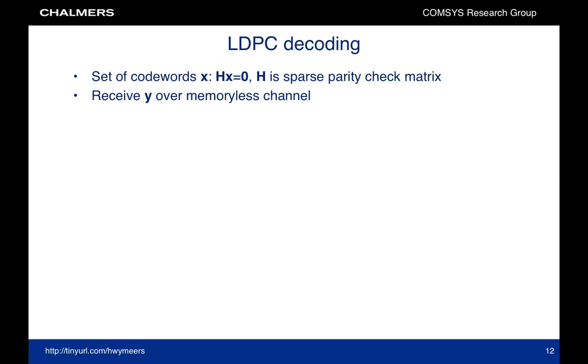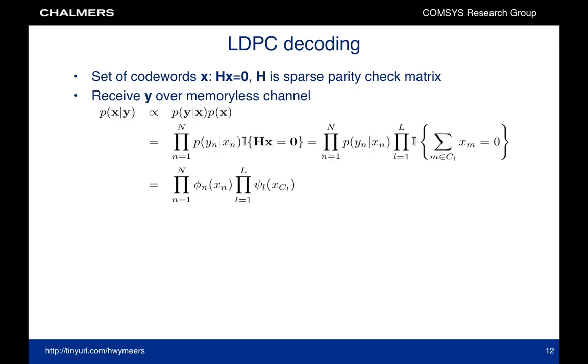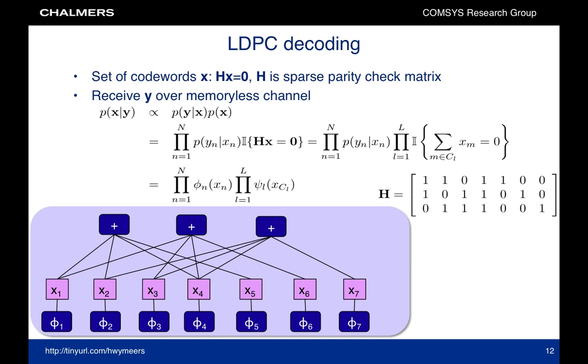As an application, let us consider LDPC decoding. In LDPC code, the set of code words can be defined through the parity check matrix. We assume that we receive a vector y over a memoryless channel. The posterior distribution can then be factorized as follows. As an example, consider the following parity check matrix. The factor graph is given as follows. The bottom row of factor vertices correspond to likelihood functions related to observations. The middle row of variable vertices correspond to the individual coded bits. And the top row marked plus correspond to the check nodes that enforce the parity check constraints.